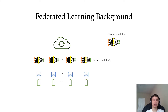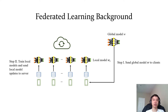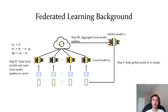In each iteration, federated learning performs the following three steps. In step one, the server sends the current global model to clients. In step two, clients update their local models based on the current global model and their local data. The clients then compute the difference between the local model and the global model, called the local model update, and send it to the server. In step three, the server aggregates the clients' local model updates to obtain a global model update and uses it to update the global model.